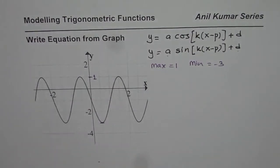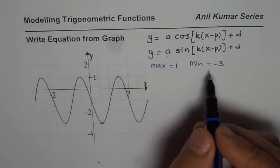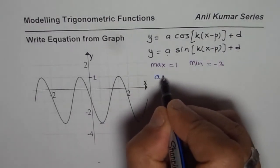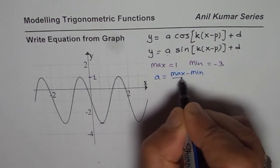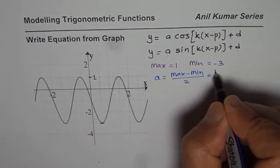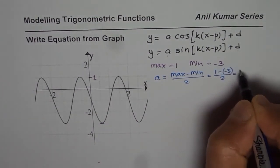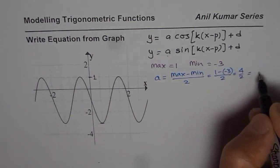Now the value of a can be calculated as the difference of these divided by 2. So a equals maximum minus minimum divided by 2, which is 1 minus minus 3 divided by 2, or 4 over 2, which is 2.